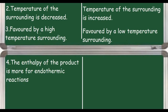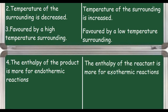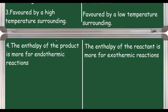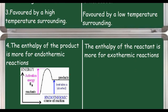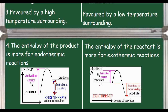The fourth point: the enthalpy of the product is greater for endothermic reactions, while the enthalpy of the reactant is greater for exothermic reactions. As you can clearly see in the diagram, for endothermic reactions the enthalpy of the product is higher than that of the reactant. For exothermic reactions, the enthalpy of the reactant is more than that of the product.